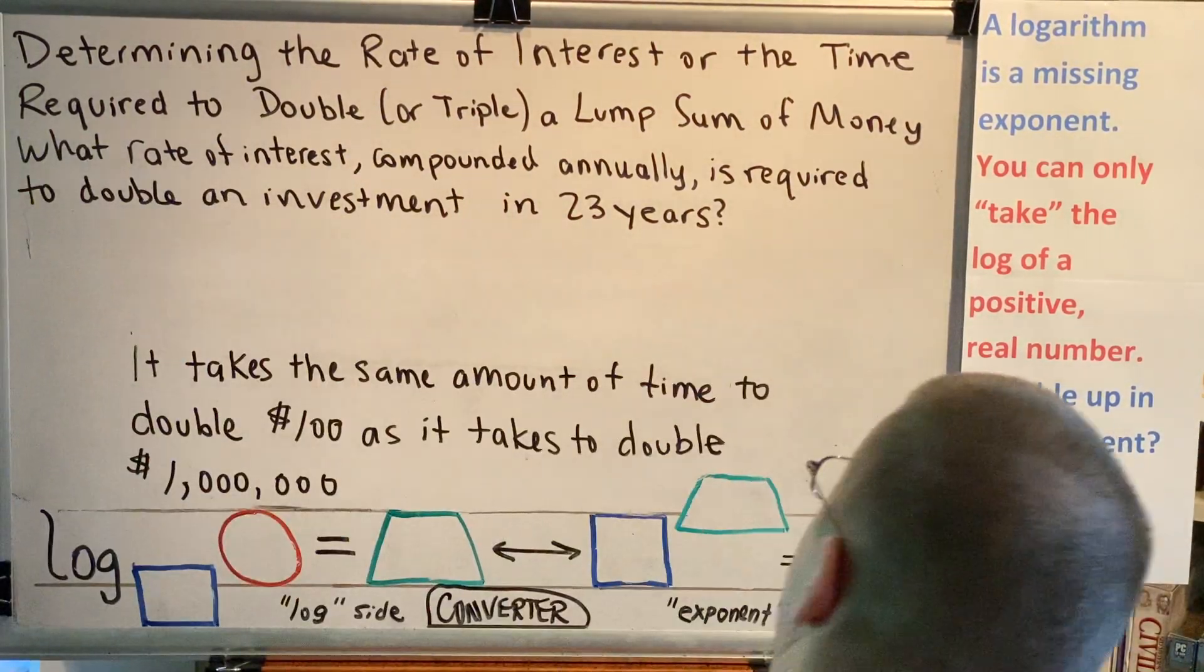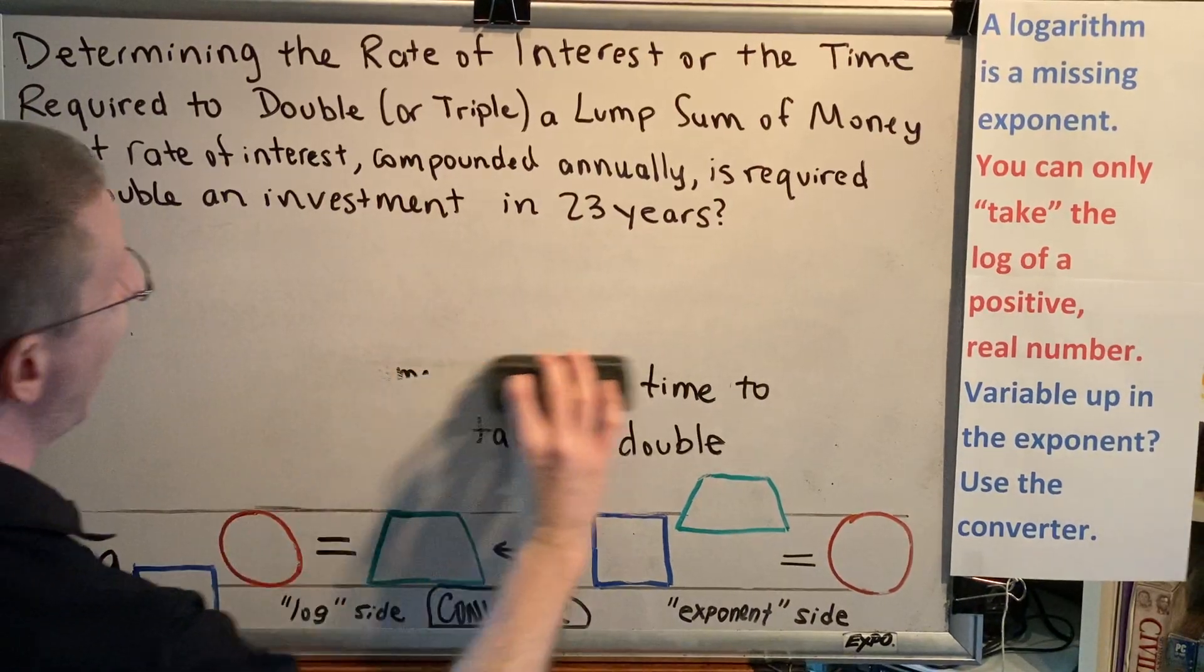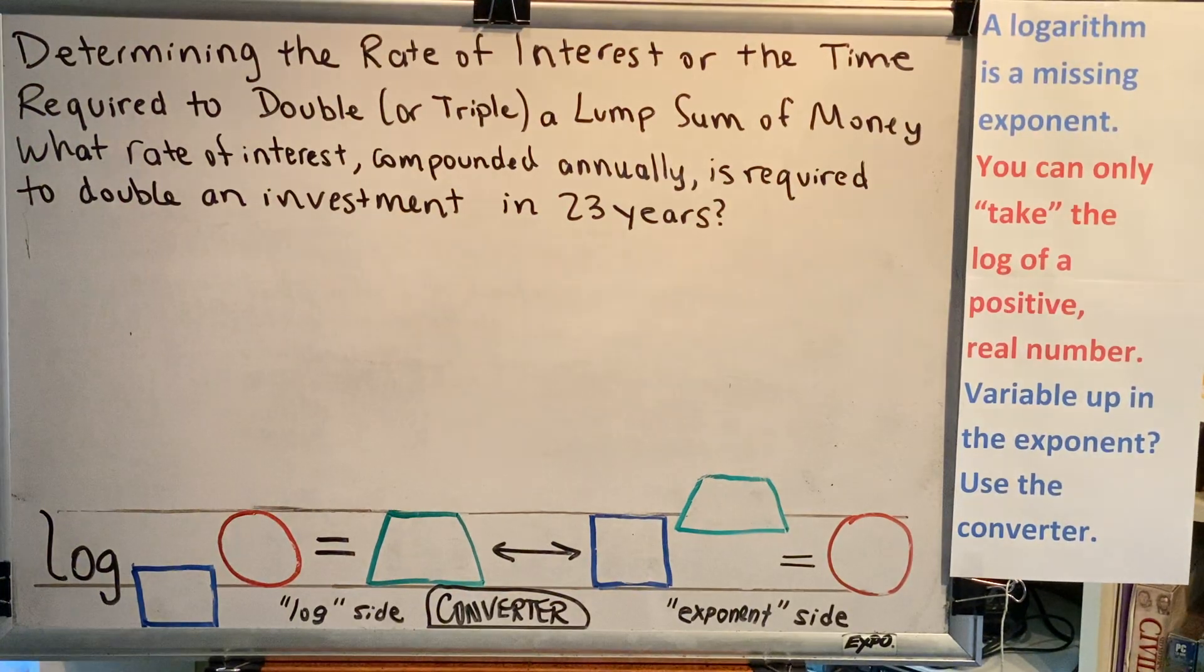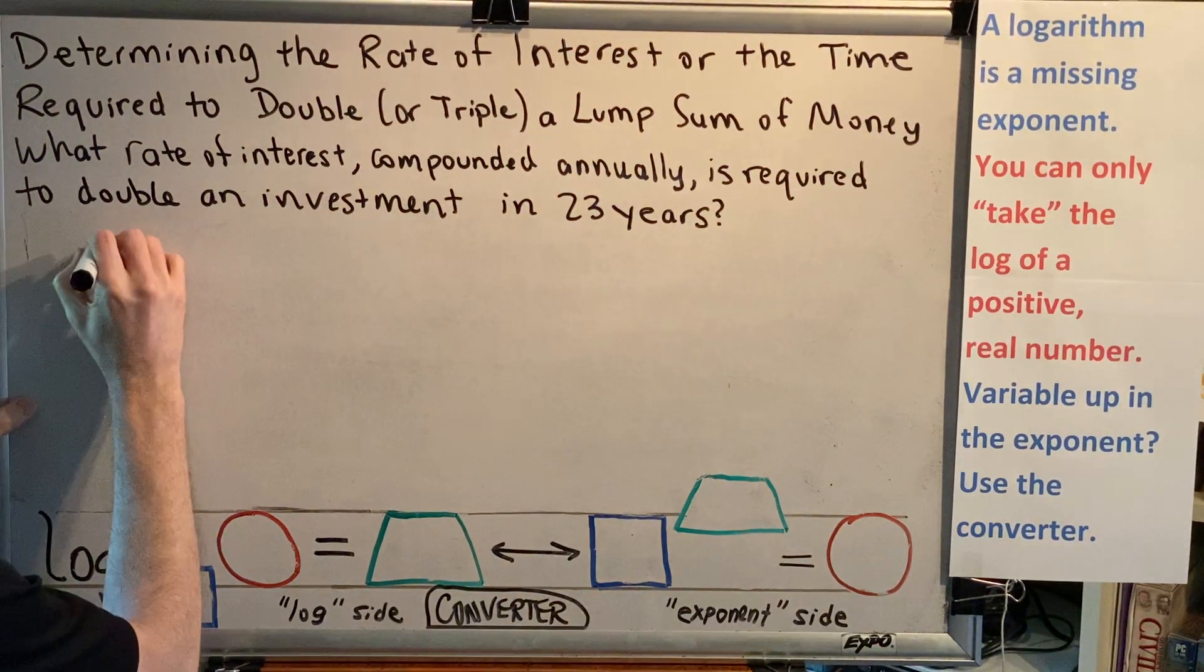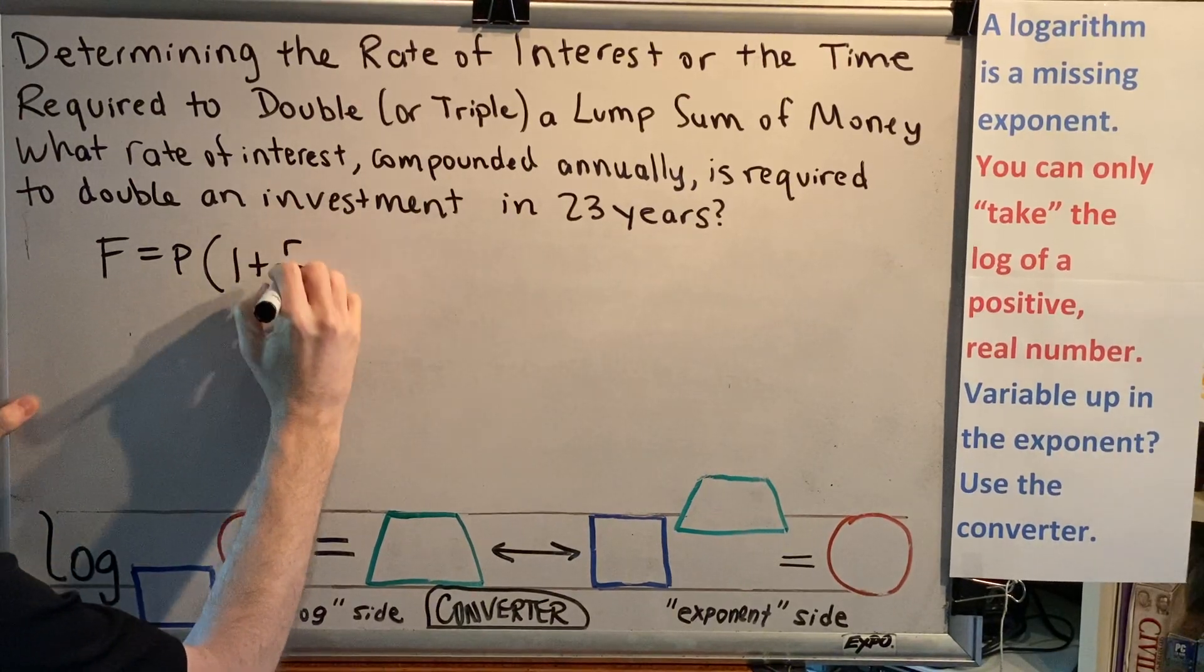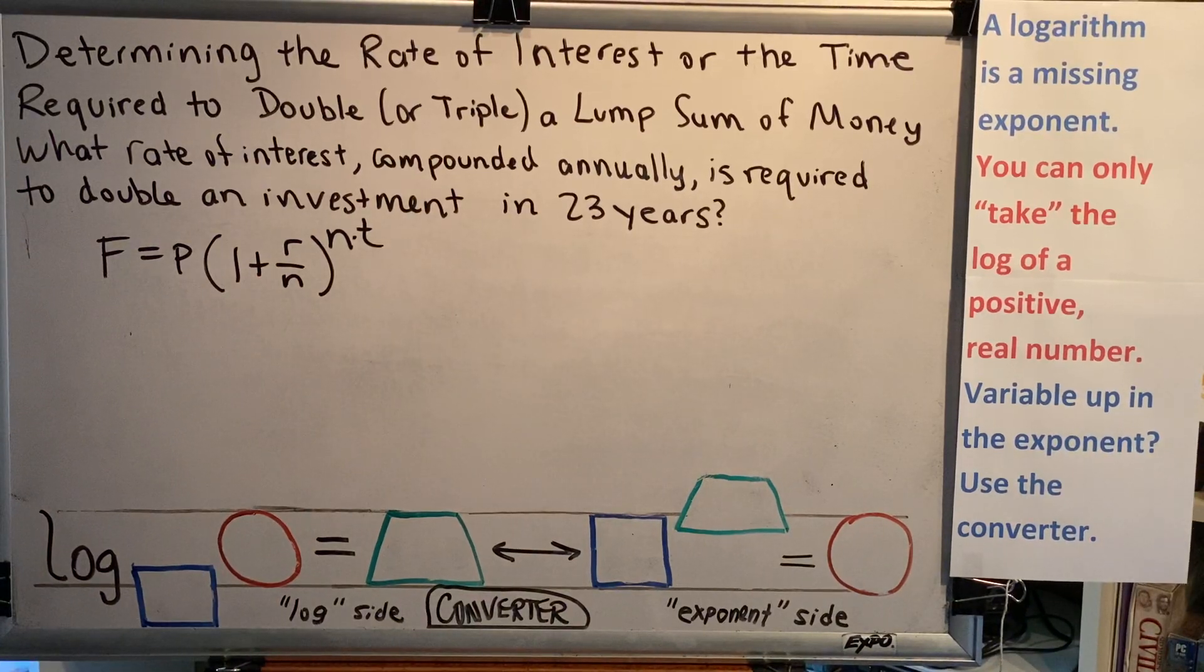Alright, so let's solve this problem. We will not use the PERT formula. We will use F equals P times the quantity 1 plus R over N, all raised to the NT power. Alright, let's write down everything we know.